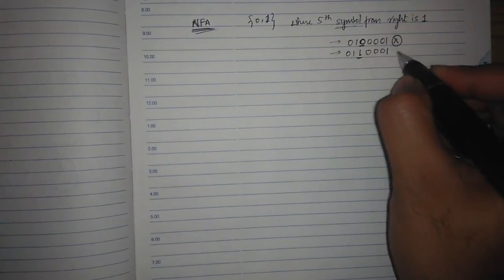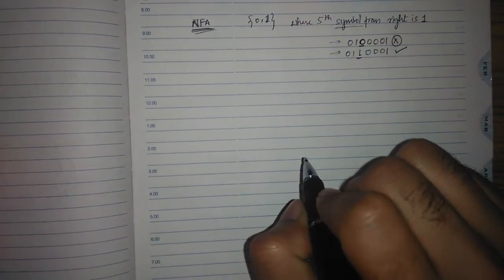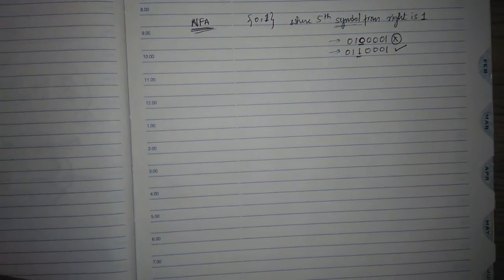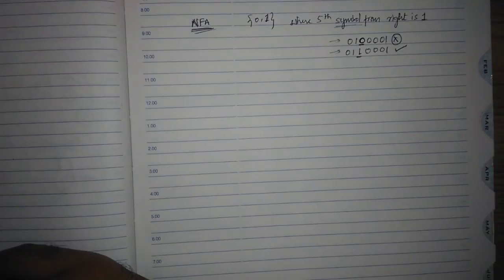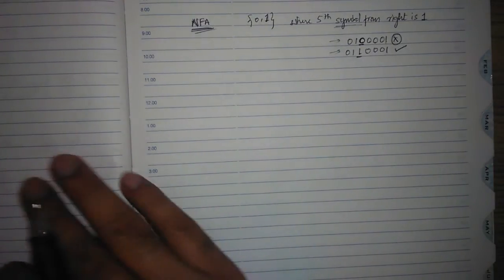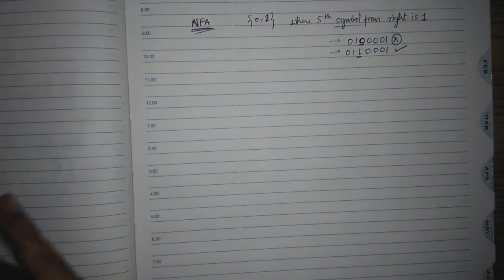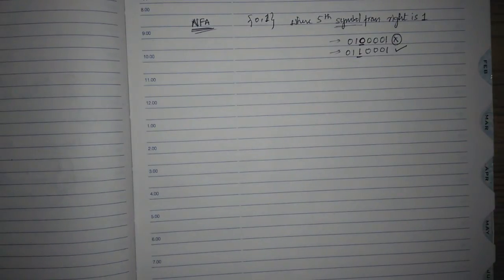This one should be accepted, so this is what they mean by this question. Now let's construct this. By seeing the question, what we know is we should have at least five transitions because we have to test the fifth symbol.